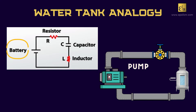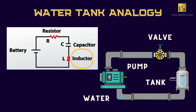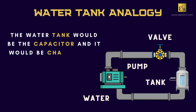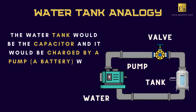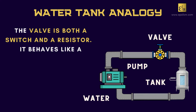The pump acts as the battery, the valve acts as the resistor, the tank acts as the capacitor. The water tank would be the capacitor, and it would be charged by a pump — a battery — which fills it up. The valve is both a switch and a resistor; it behaves like a variable resistor.